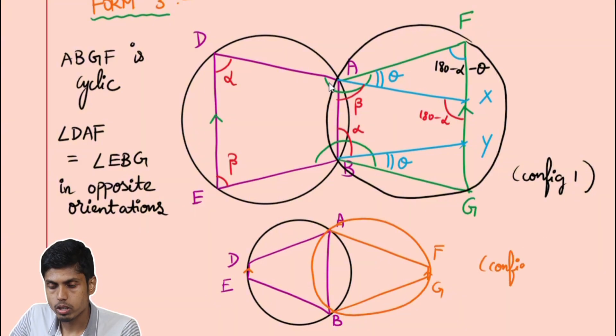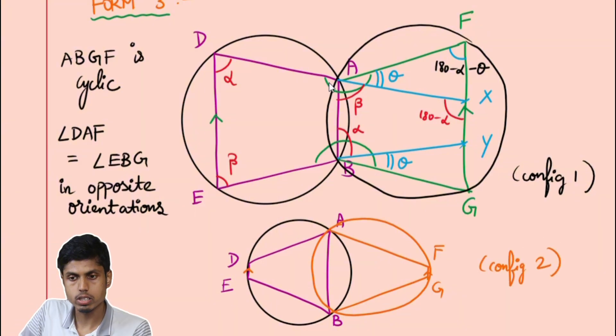So that's all about the Reim's theorem and their configurations. So whenever you encounter such beautiful configurations, be conscious and identify them to conclude that some two lines are parallel or some four points are cyclic. Thank you and all the best.